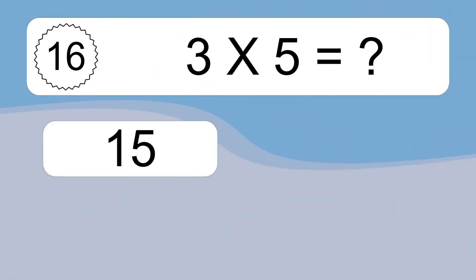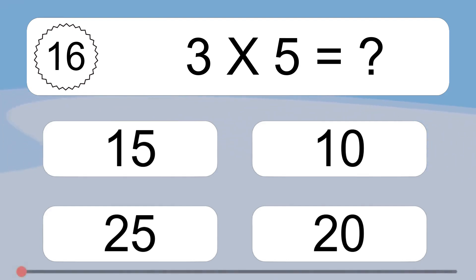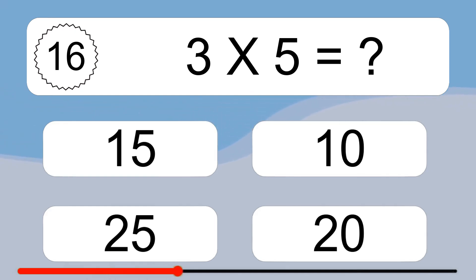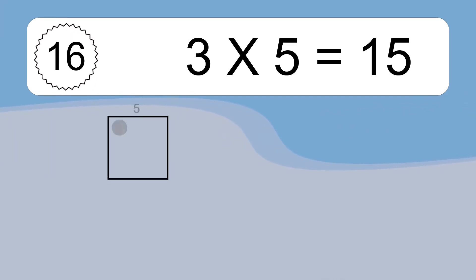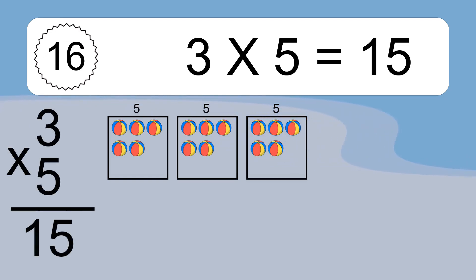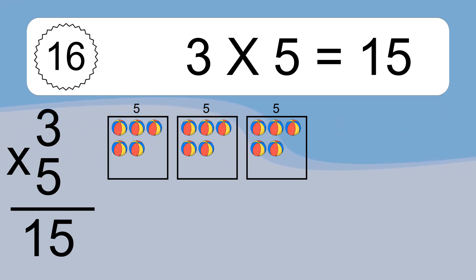3 times 5 equals what? 3 times 5 equals 15. We have 3 boxes and each box has 5 colorful balls inside. If you count all the balls in all the boxes together, you will have 3 times 5 balls. This equals 15 balls.